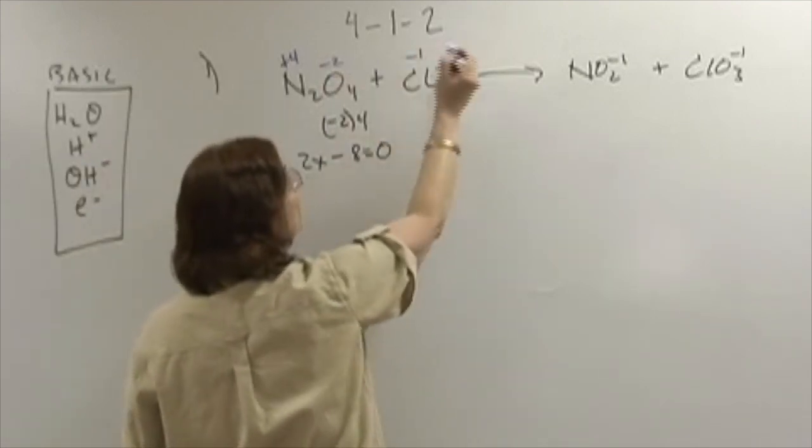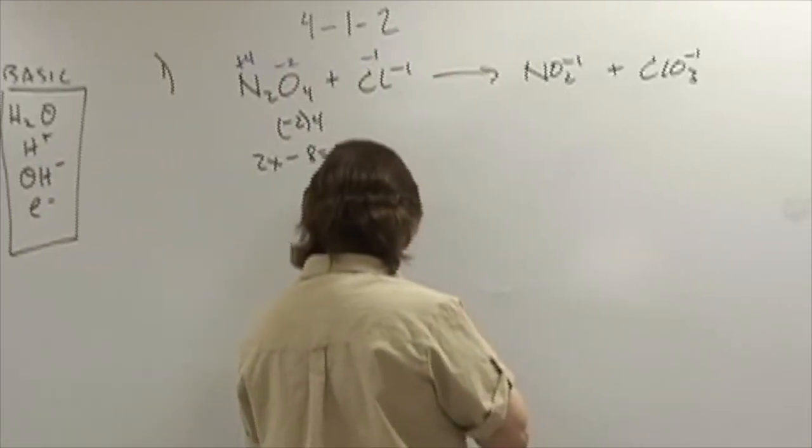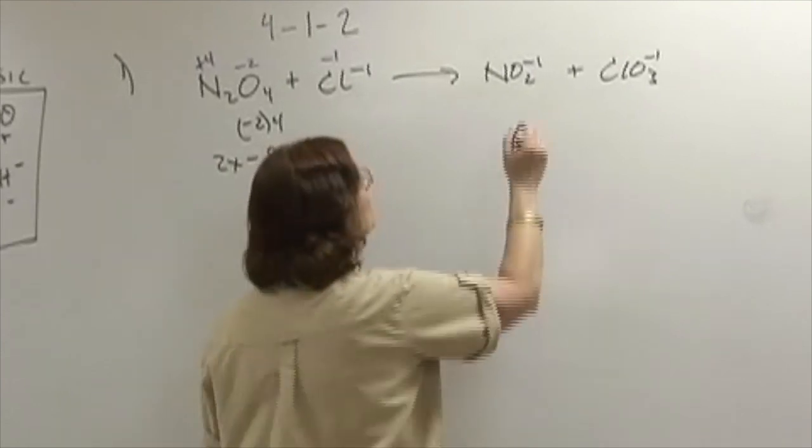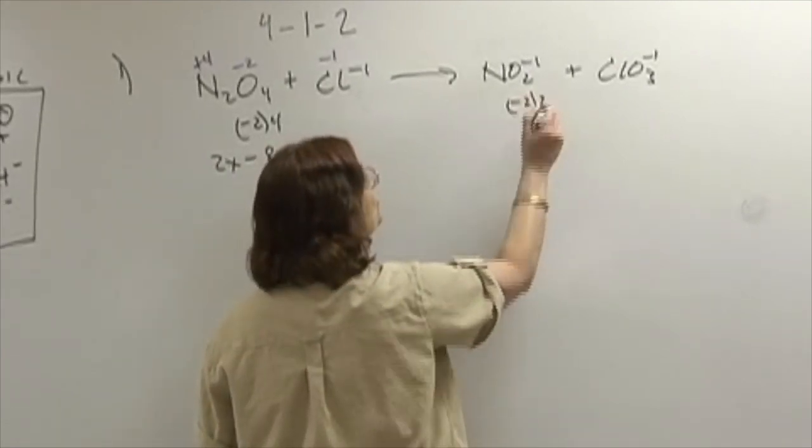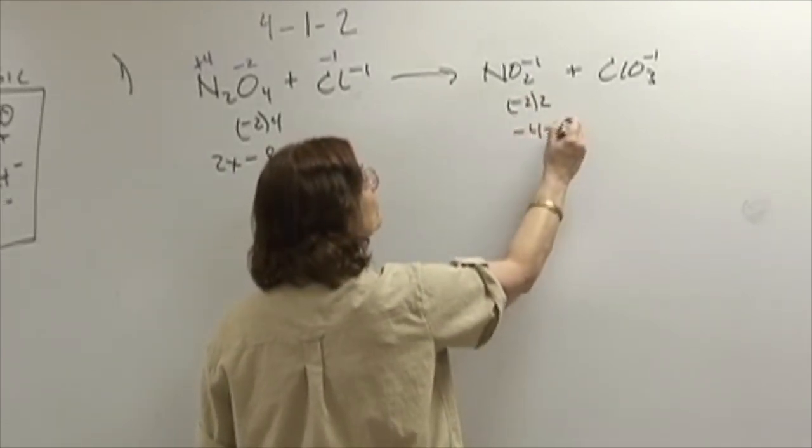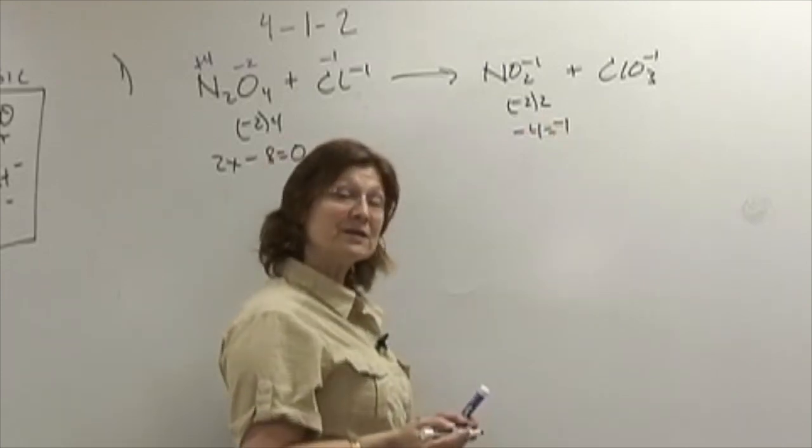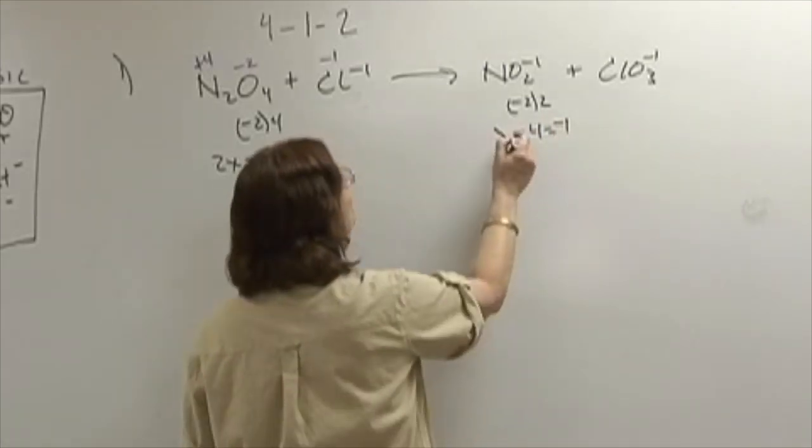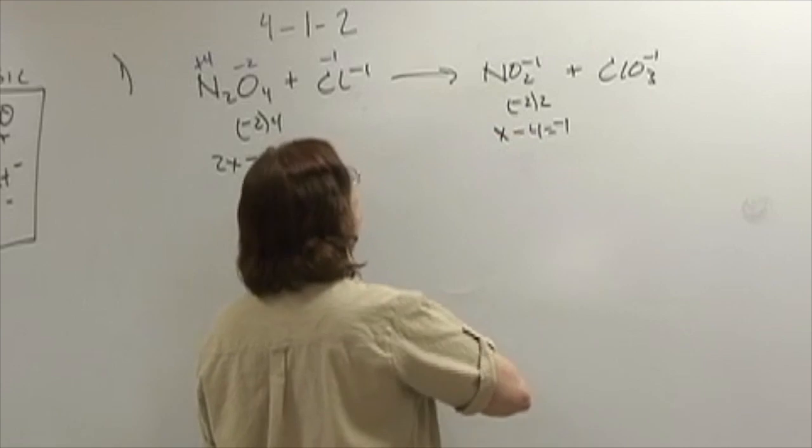Chlorine here is -1. Oxygen here is also in the negative position, it is -2. There are two of them, giving me -4. The overall charge of the polyatomic ion is -1, and therefore in this case, nitrogen is +3.